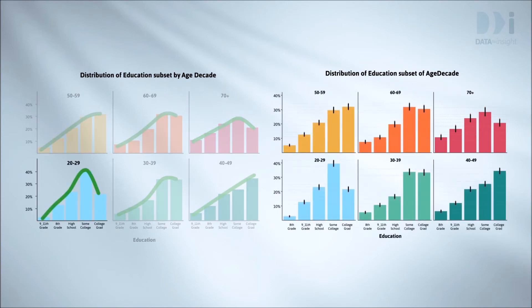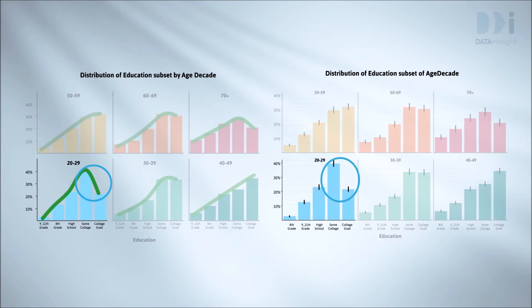And then there was an even bigger drop-off in the 20 to 29 group. That change is clearly real too. The intervals are even more widely separated.